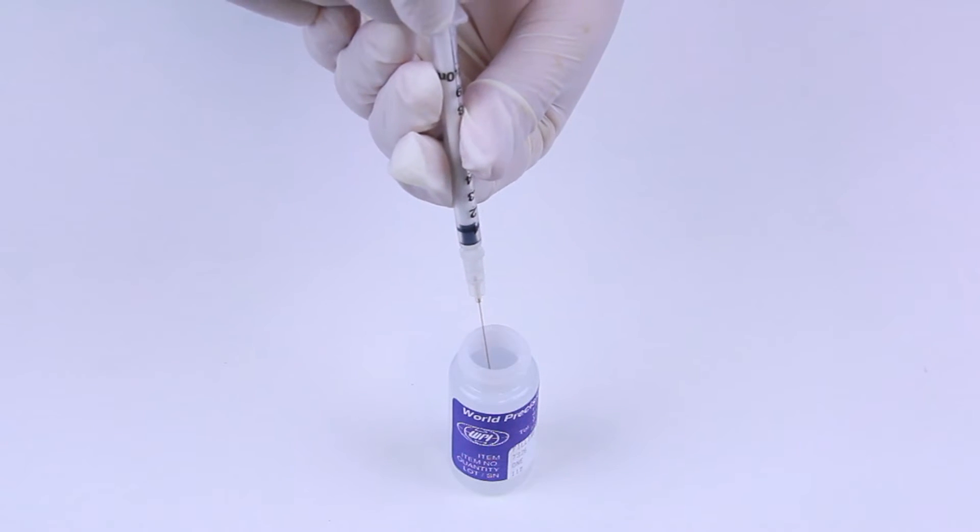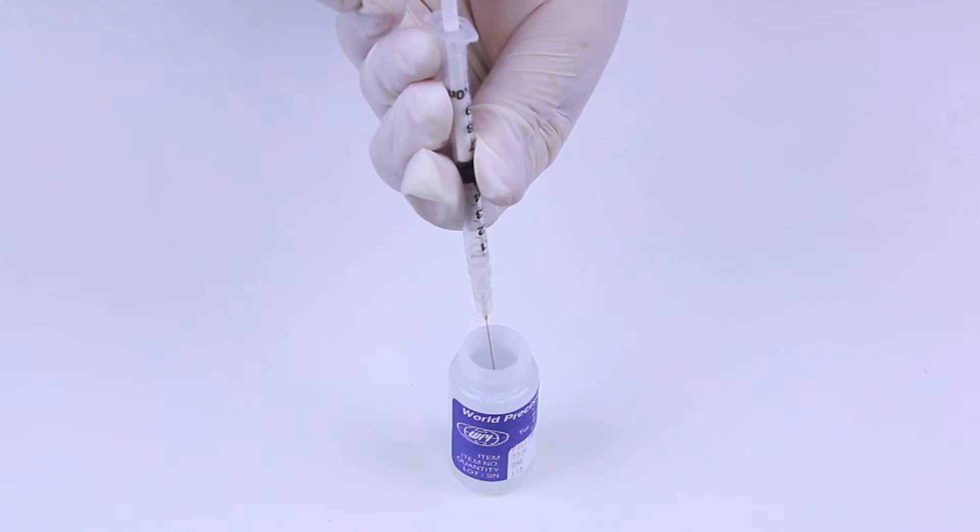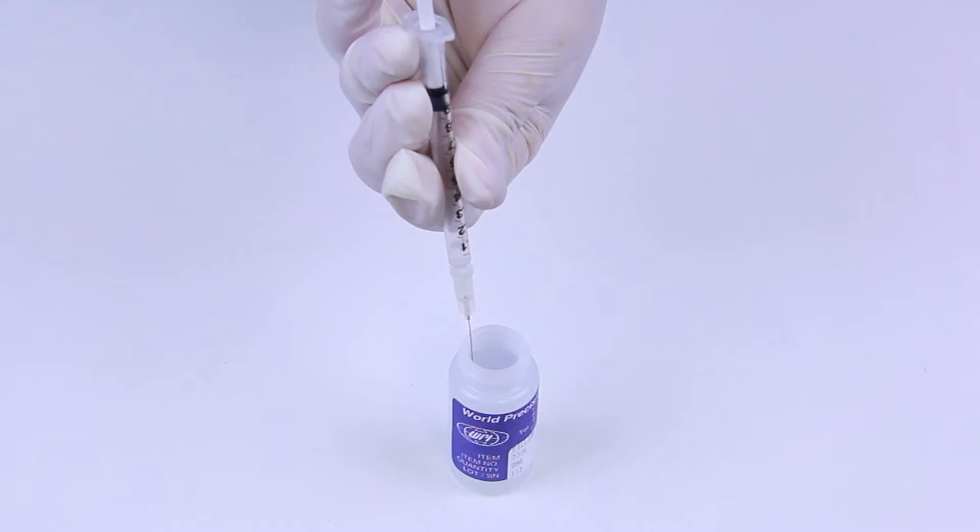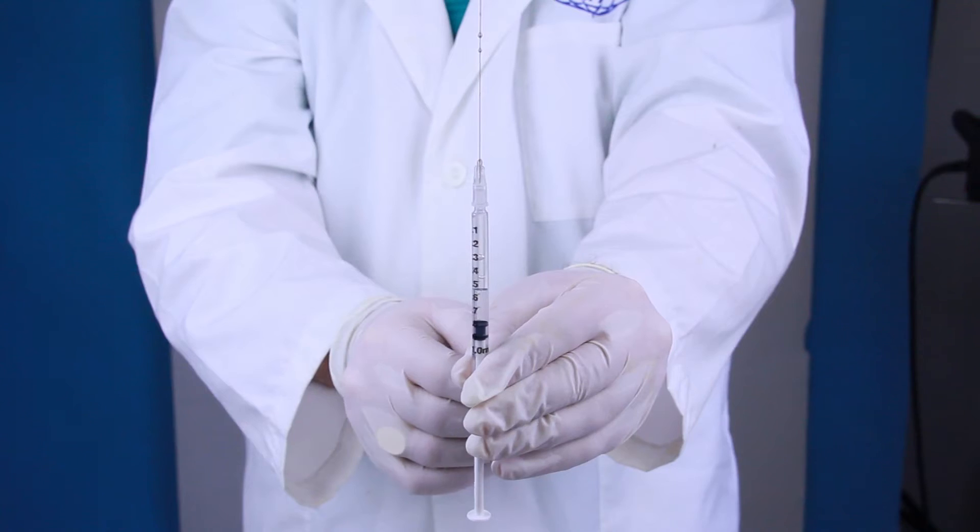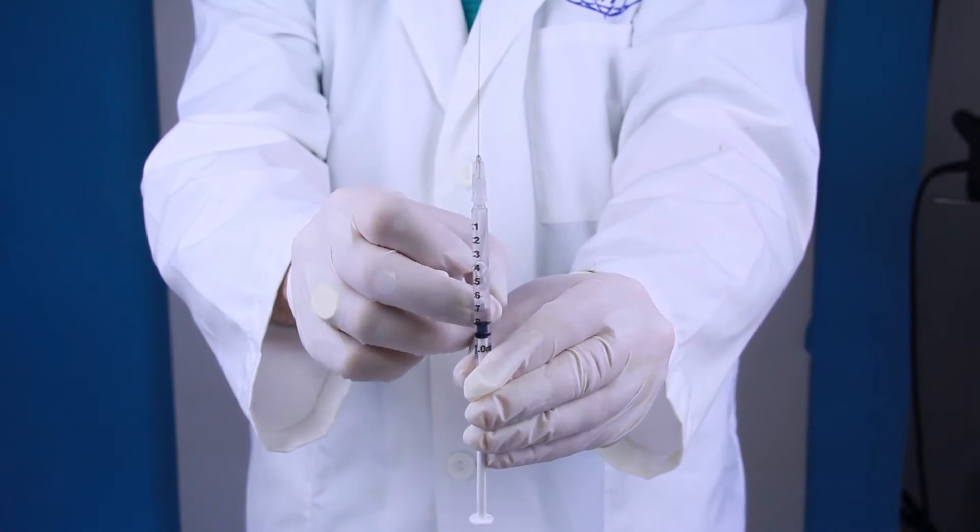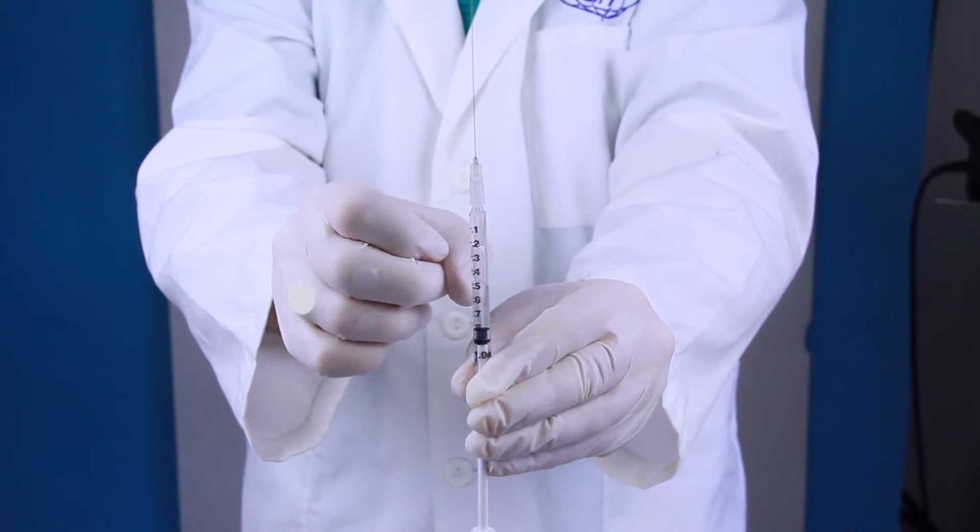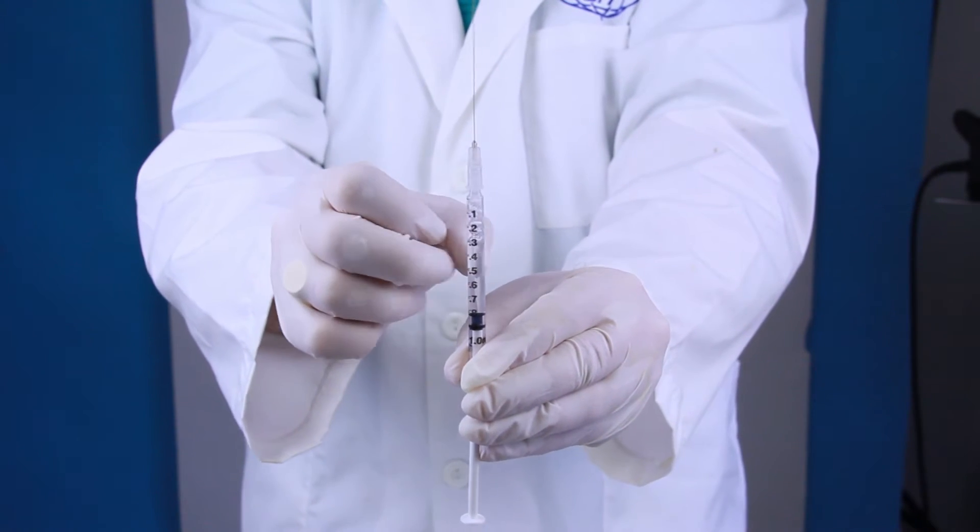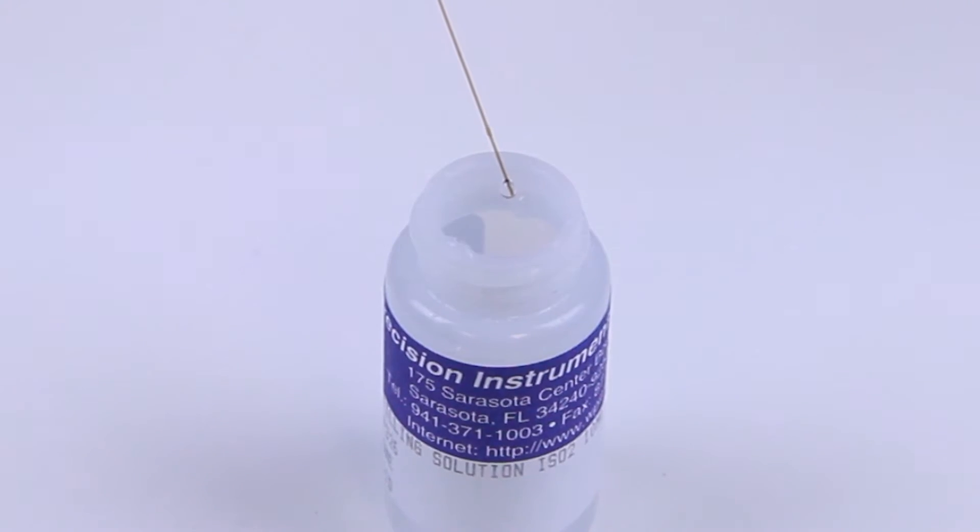Draw up a small volume of solution, about one milliliter, enough to fill the sleeve. Tap the syringe to shake loose any trapped air bubbles and move them upward. Then eject a few drops of fluid to make sure any bubbles are expelled.